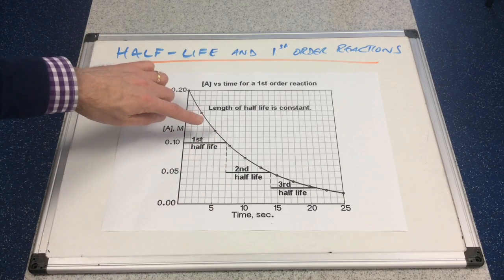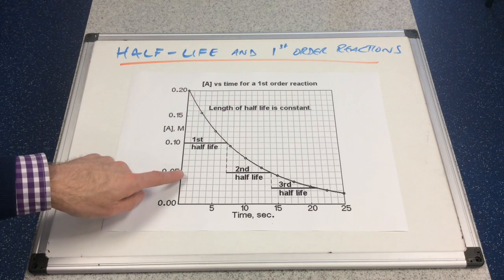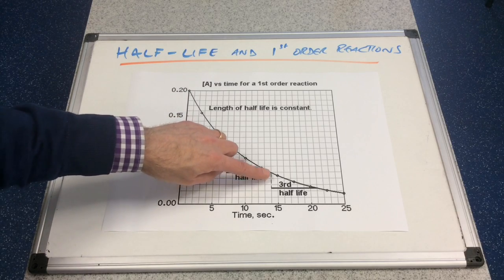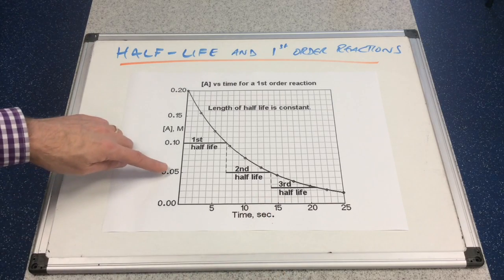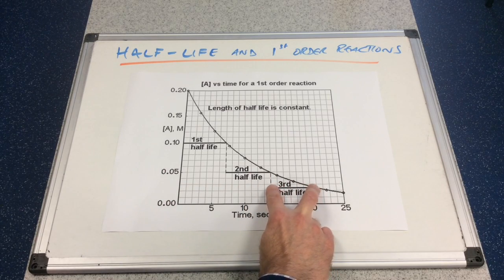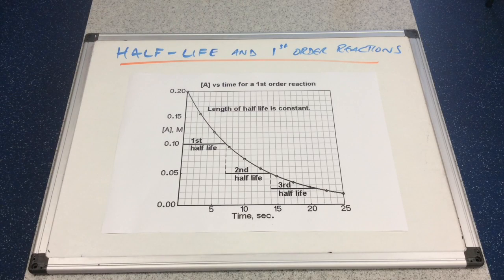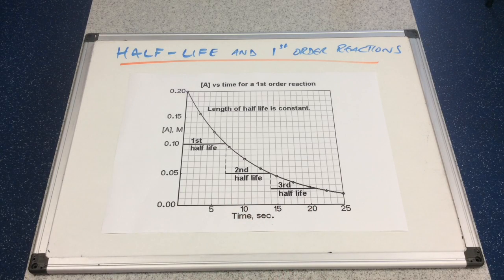The second half-life would be the time it takes to go from 0.1 moles per decimetre cubed to 0.05 moles per decimetre cubed. And then to go from 0.05 moles per decimetre cubed to 0.025 moles per decimetre cubed is the next period. Hopefully you can see by looking at the graph that the half-life for this first-order reaction is constant — that's a really important fact for the rates topic. First-order reactions have constant half-lives.